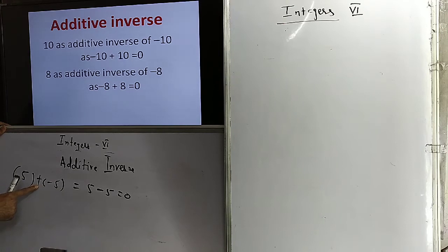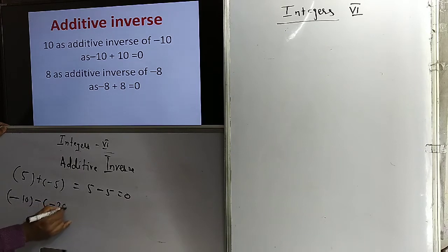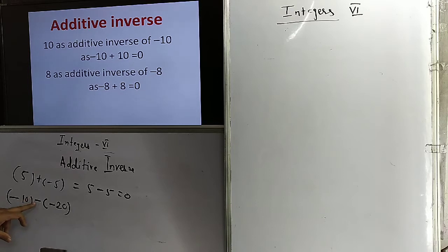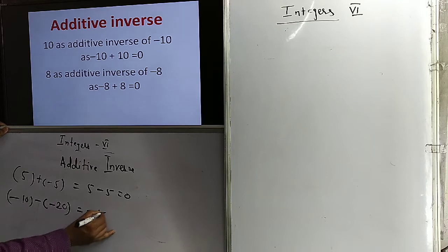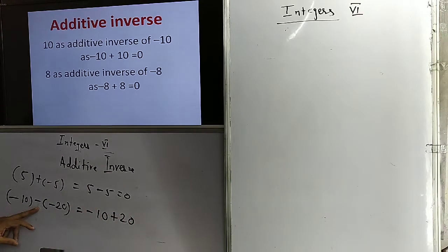If instead of a plus sign, there is a minus sign outside the bracket, then what happens? Suppose it is minus 10, and we have minus of minus 20. If outside the bracket there is a minus sign, then this minus into minus becomes plus. So we have minus 10 and the additive inverse of minus 20, which is plus 20.